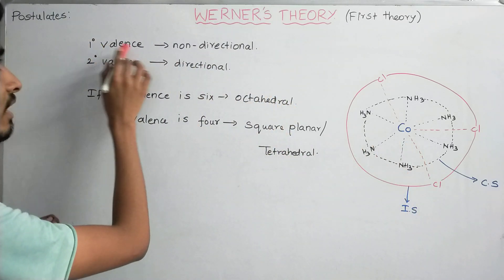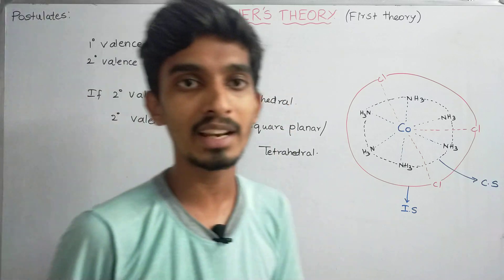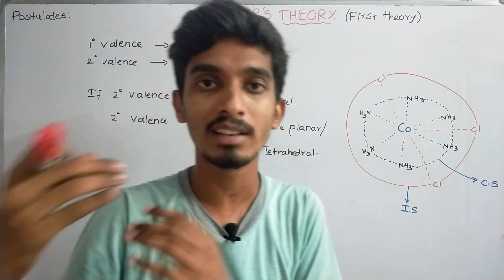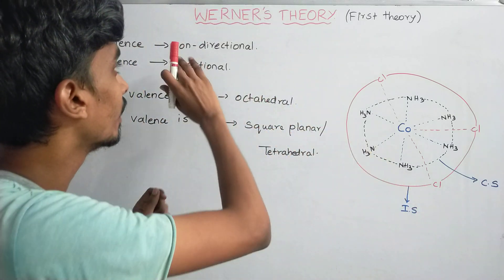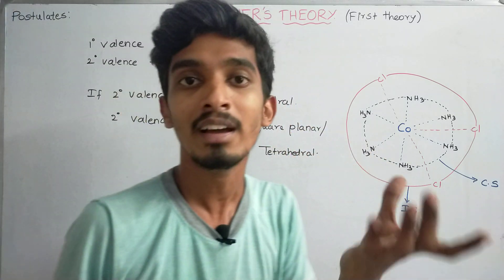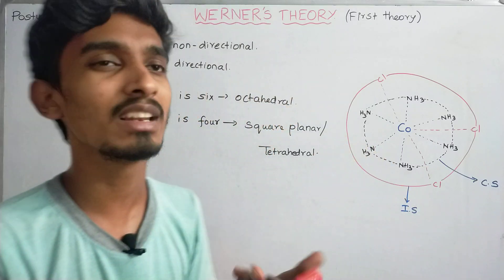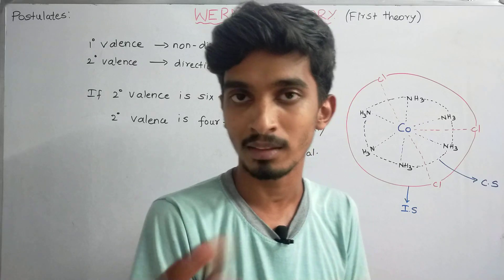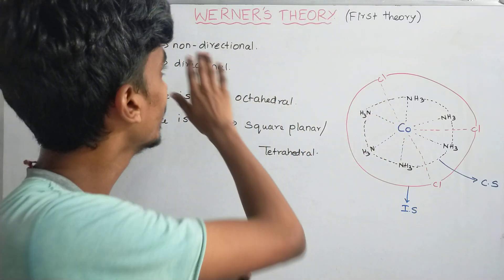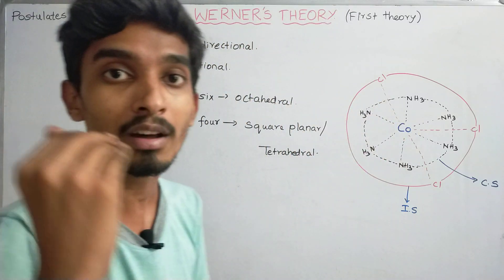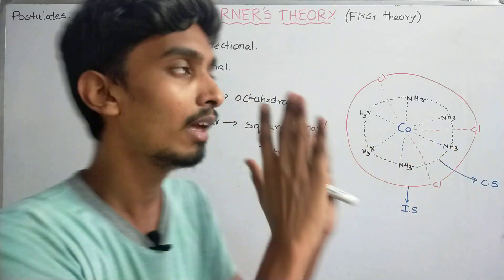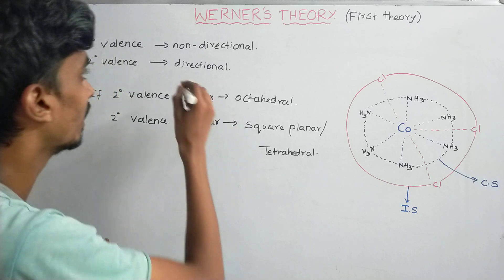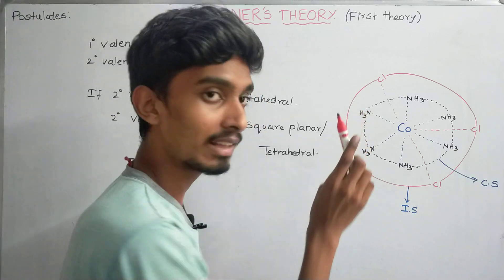The last point: primary valence is non-directional. Non-directional means it does not depend on direction or distance. Primary valence is the oxidation number — for example, +3 or +2 — and it is not connected to any specific spatial direction. So primary valence does not depend upon the distance or direction. Secondary valence, on the other hand, is directional in nature.